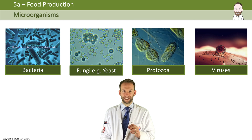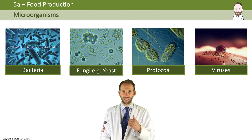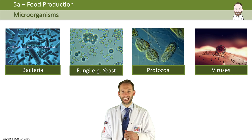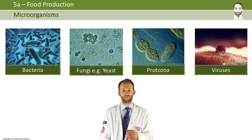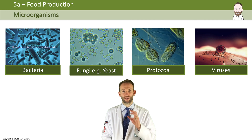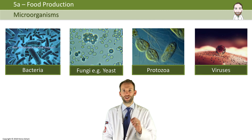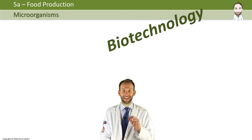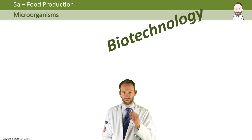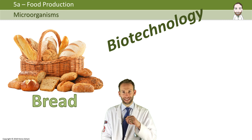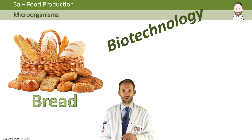Let's now talk about microorganisms and their role in food production. Microorganisms are living organisms that can only be seen with the help of a microscope. They can cause serious disease in humans, or they can be harnessed and used for our benefit. Microorganisms can be used in food production — we call this process biotechnology. There are two examples you need to know about: how yeast is used to make bread, and how bacteria are used to produce yogurt.